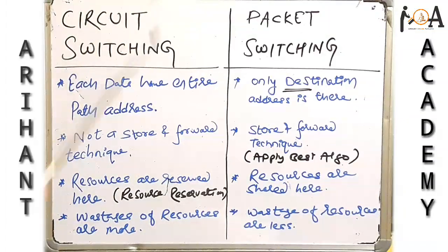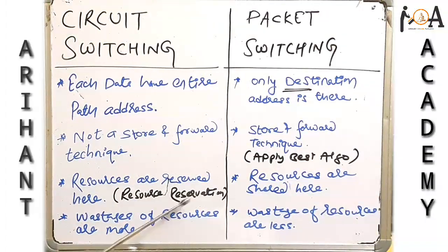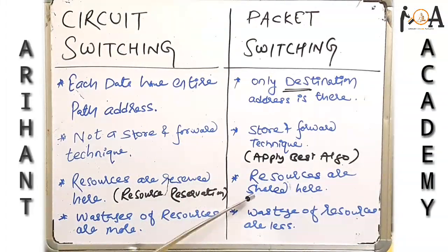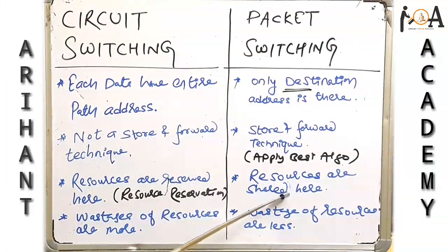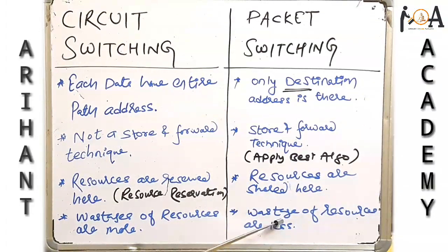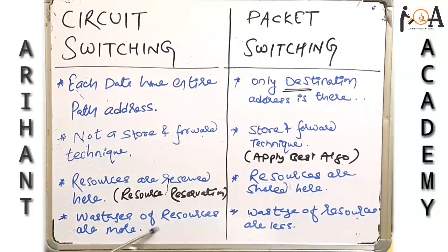In circuit switching, resources are reserved — resource reservation means the resources are not shared, and that is why wastage of resources is very high. Whereas in packet switching, resources are shared, and therefore the wastage of resources is less.